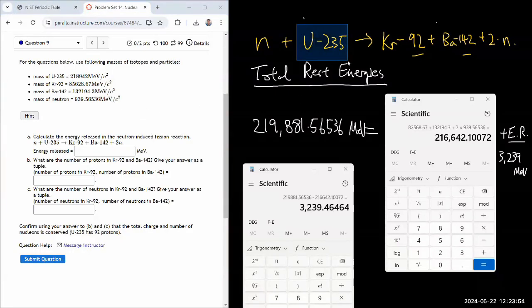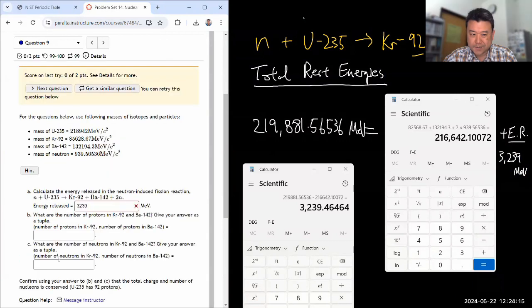If I had forgotten them, it wouldn't have mattered. Because rest energy of electron is only 0.5 MeV. So in this number scale, it's a rounding error. So it would have been fine. 3239 MeV. Let's make sure the system grades that as correct. Nope. What did I miss?